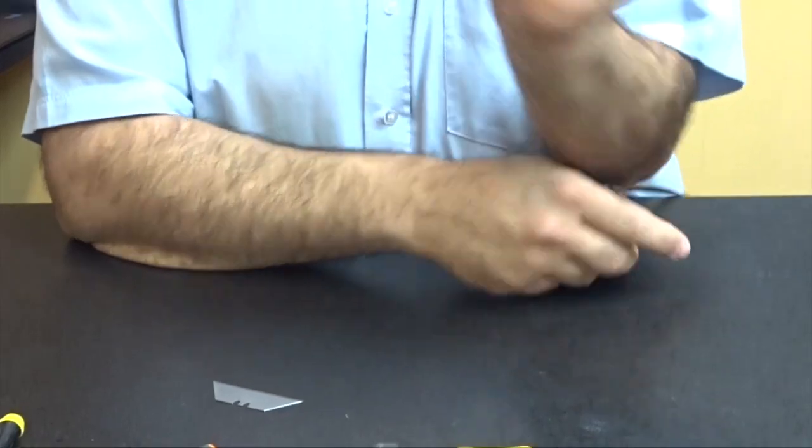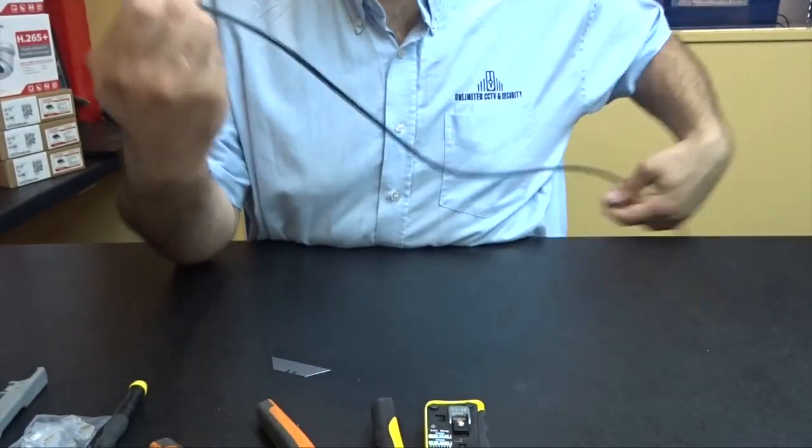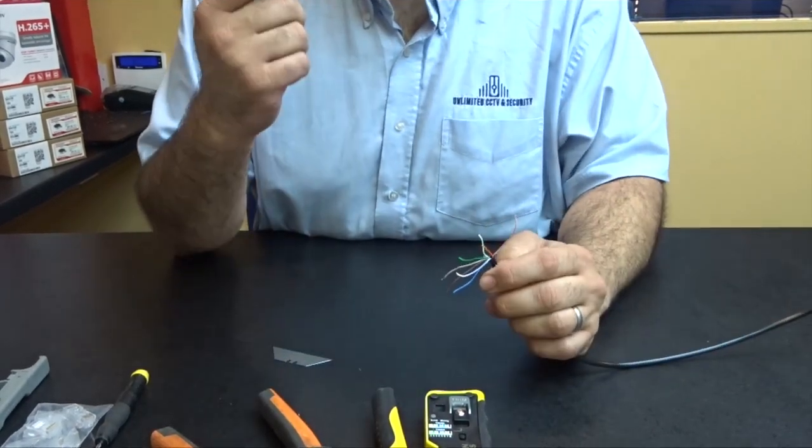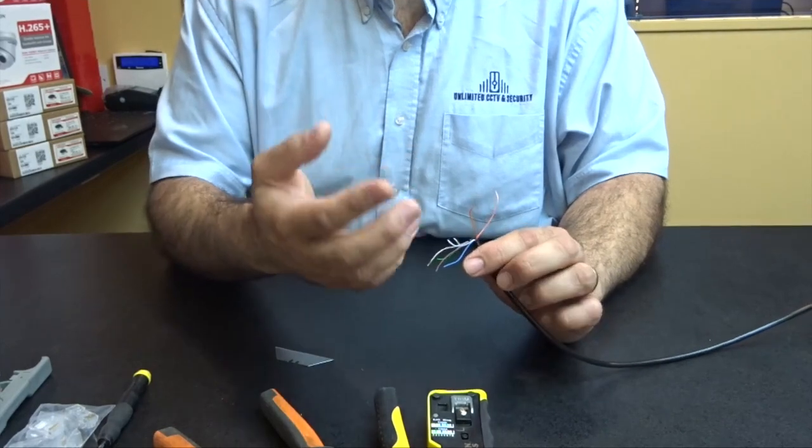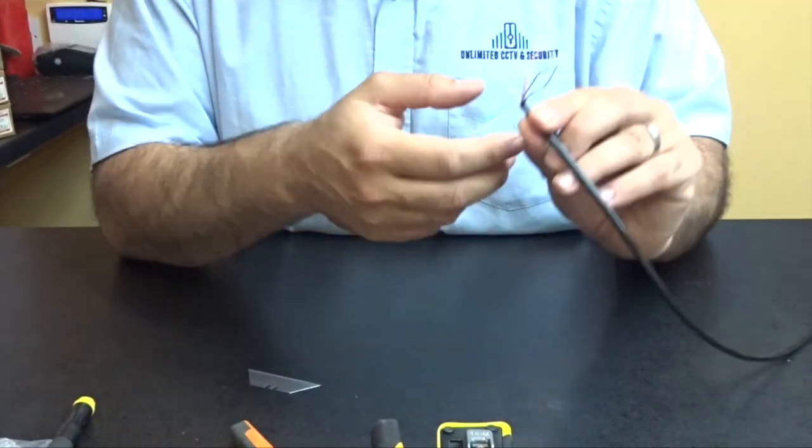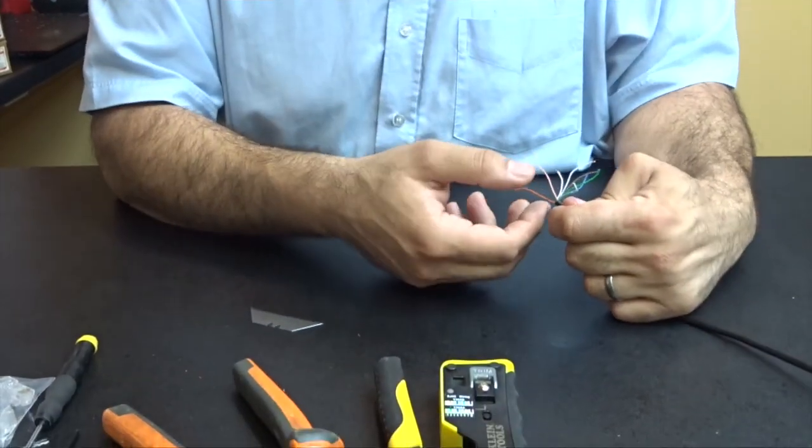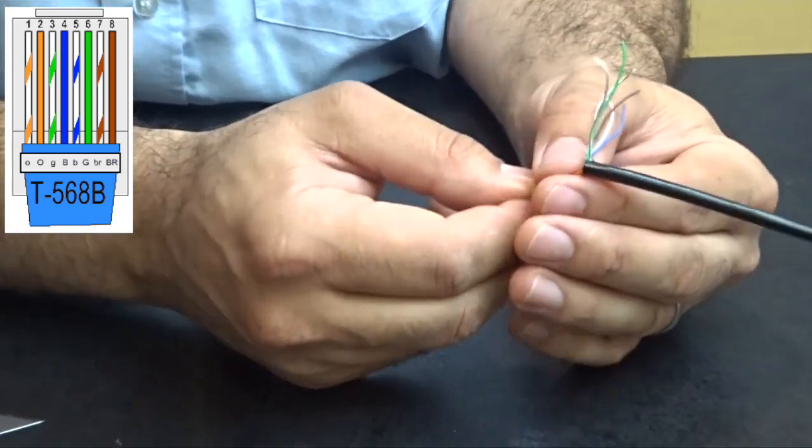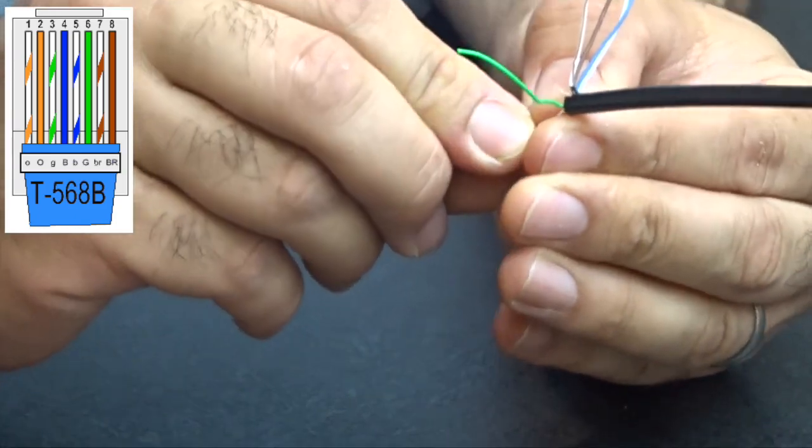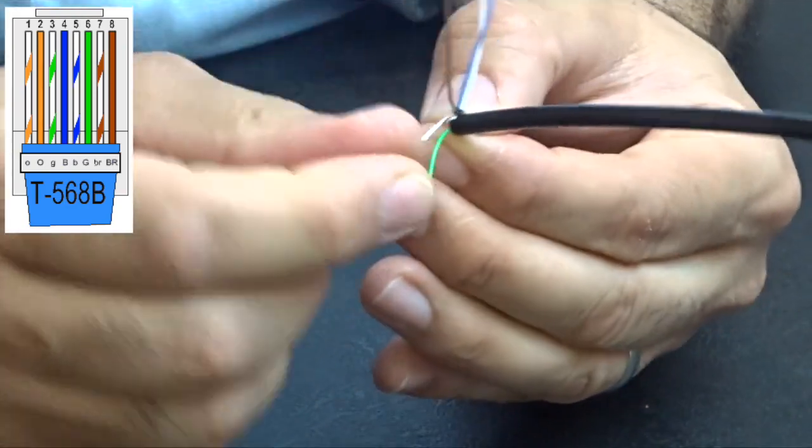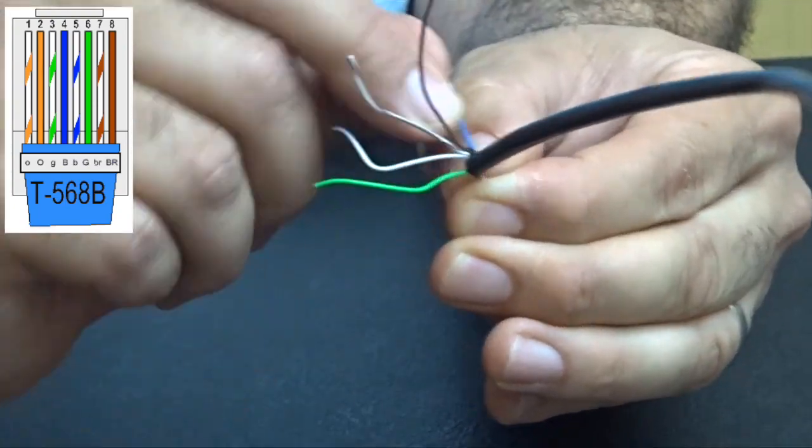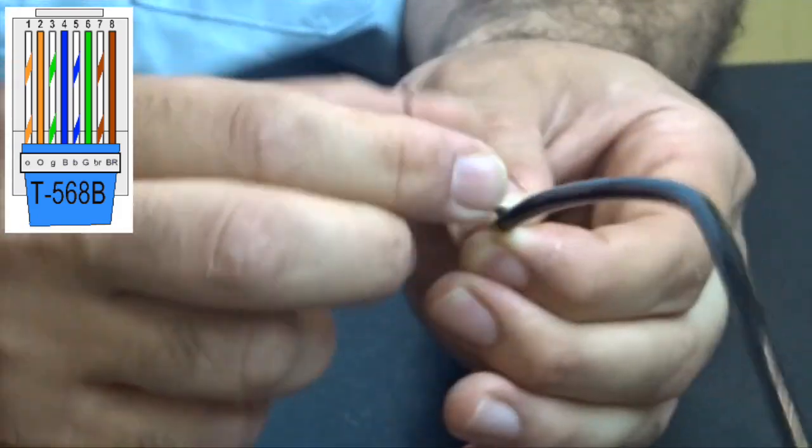So now we get the colors. It's very important that you get the colors the right way around. For CCTV and network situations, the twists in the pairs is how the data works but it is very important to it. So colors we need to use is orange and white, orange, green and white, green and white, and then blue, blue and white, green, brown and white, brown.